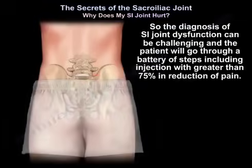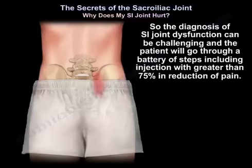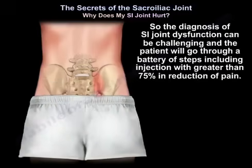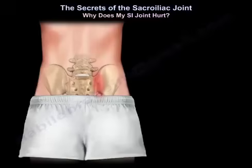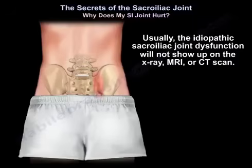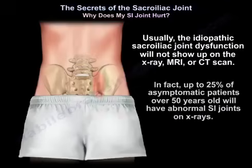The diagnosis of sacroiliac joint dysfunction can be challenging, and the patient will go through a battery of steps including injection with greater than 75% reduction in pain. The cause of the pain is usually idiopathic with multiple risk factors. Idiopathic sacroiliac joint dysfunction will often not show up on x-ray, MRI, or CT. In fact, up to 25% of asymptomatic patients over 50 years old will have abnormal sacroiliac joints on x-ray.